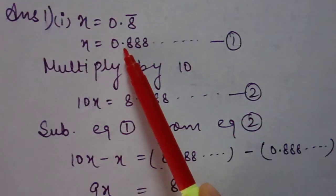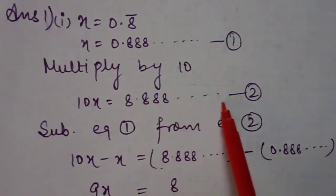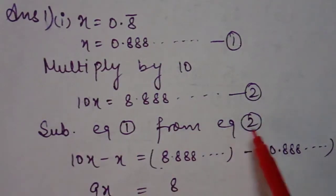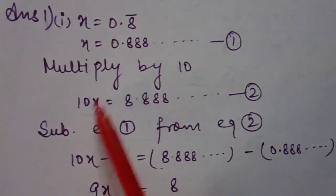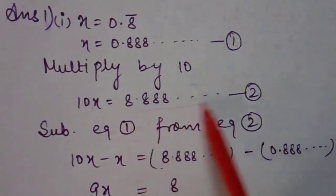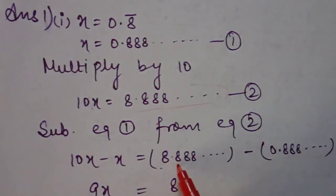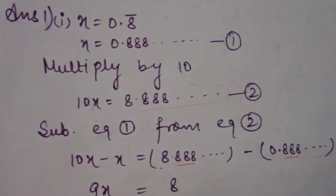When we multiply by 10, the decimal shifts one place, so 10x equals 8.888 and so on. This is equation number 2. Now we subtract equation number 1 from equation number 2: 10x minus x. After the decimal we have infinitely many parts on both sides, so they all subtract to zero, and 8 minus 0 is 8.